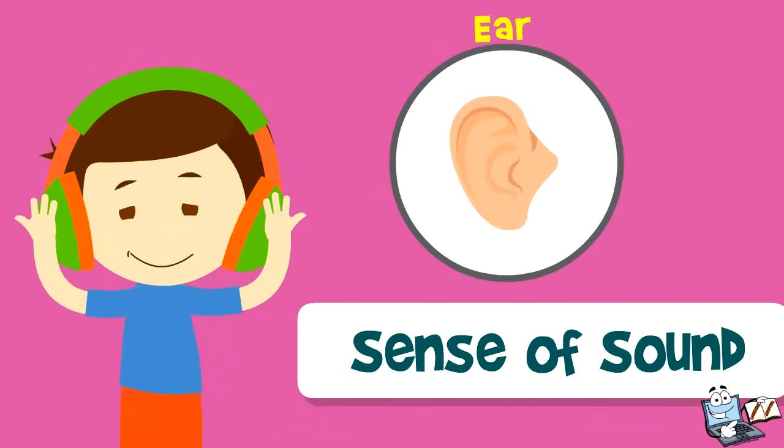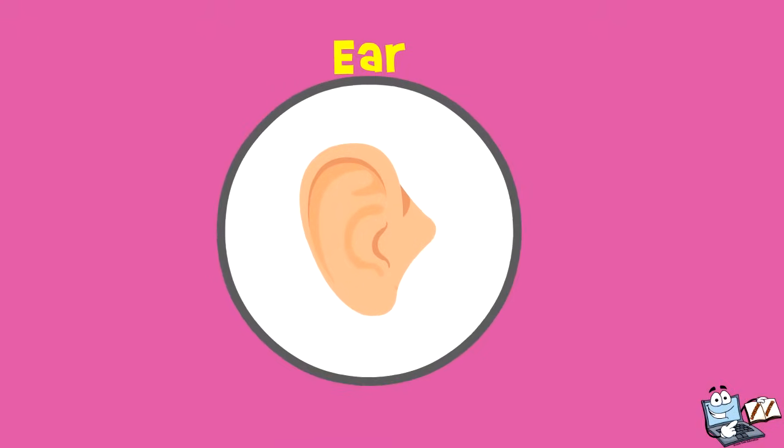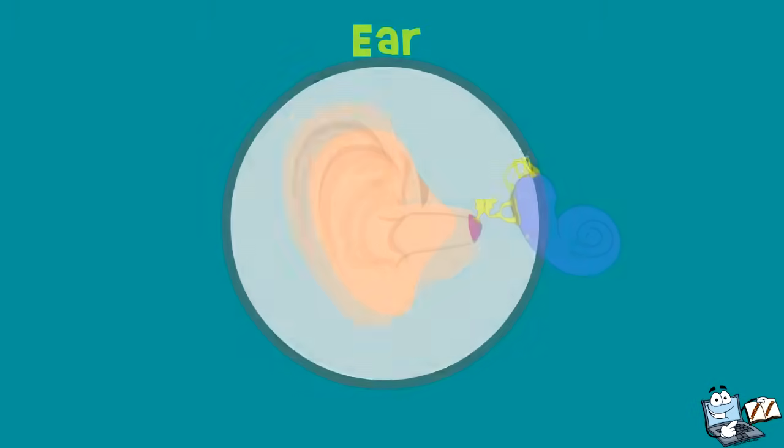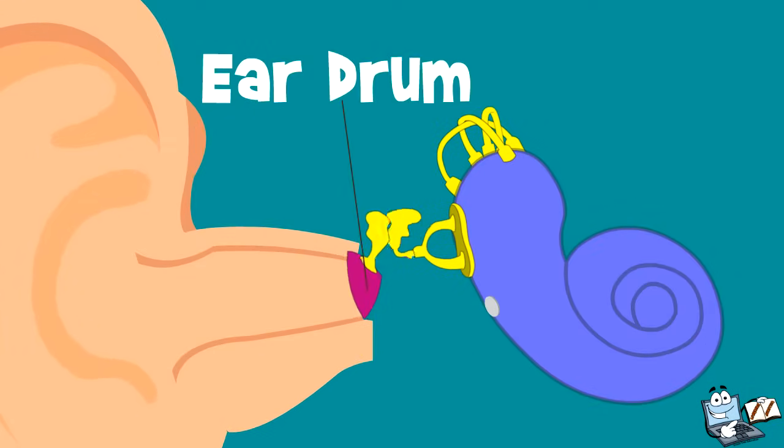Now, let's learn about the sense of sound. The organ that is used to sense sound is our ears. Let us first understand the structure of ears. Look closely. This is the outer part of the ear called pinna. The canal-like structure is called the external auditory canal. Here is a membrane known as an eardrum.